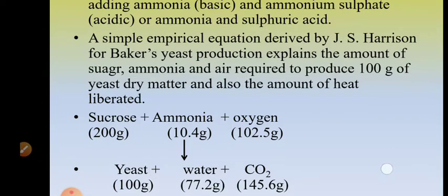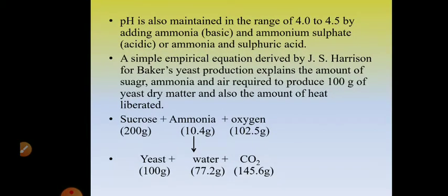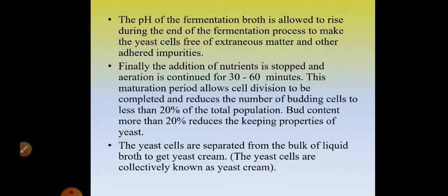There is a simple empirical formula given by J.H. Haddison for baker's yeast production. It explains the amount of sugar, ammonia, and air required to produce 100 grams of yeast dry mass and how much heat is liberated. The formula states: 200 grams of sugar plus 10.4 grams of ammonia plus 102.5 grams of oxygen gives 100 grams of yeast along with 77.2 grams of water and CO2. This gives the concentrations that must be maintained — too much sugar cannot be added at once.